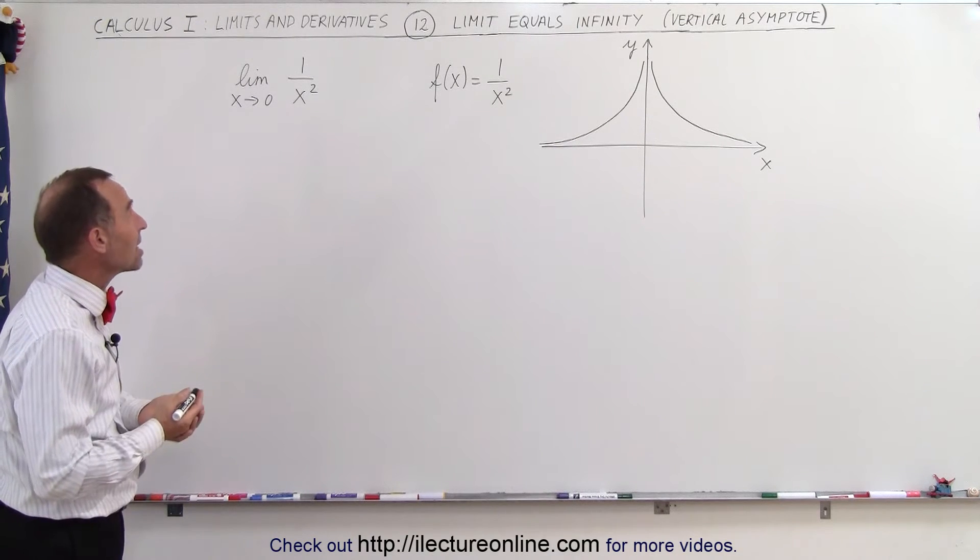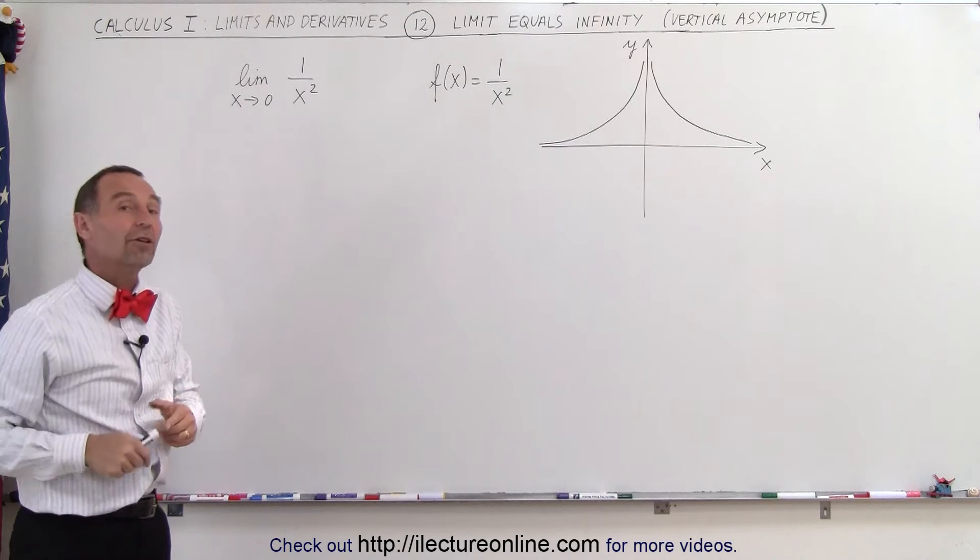So as x approaches zero, and we have the function 1 over x squared, you can see that as x gets closer to zero, we're dividing by a smaller and smaller number. One divided by a very tiny number becomes very big. As x gets closer to zero, that function will be evaluated as very large values. In the limit, when x becomes zero, the result is infinity.